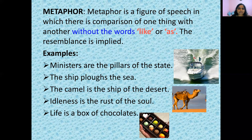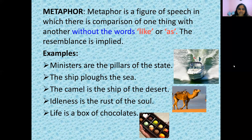Next: 'The ship plows the sea.' Plowing is what farmers do to the field, turning the land upside down to sow seeds. Here the ship is gushing through water like plowing, so the ship is compared to a plow — but no 'like' or 'as.' Next: 'The camel is the ship of the desert.' Camels travel in the desert effortlessly; they are compared to a ship that travels in oceans and seas. Again, no words 'like' or 'as.'